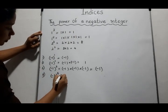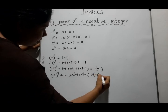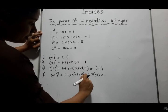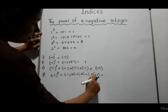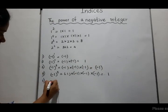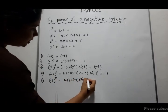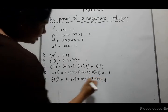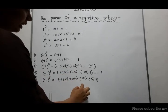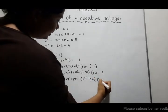(−1)⁴: (−1)(−1)(−1)(−1) — (−1)(−1) = +1, (+1)(−1) = −1, (−1)(−1) = +1. Answer is positive 1. (−1)⁵: multiplying five times — step by step gives −1. And (−2)¹ = −2, (−2)² = (−2)(−2) = positive 4.